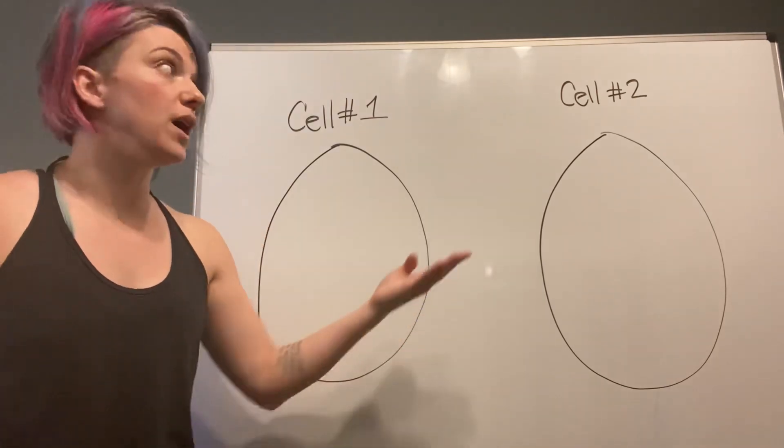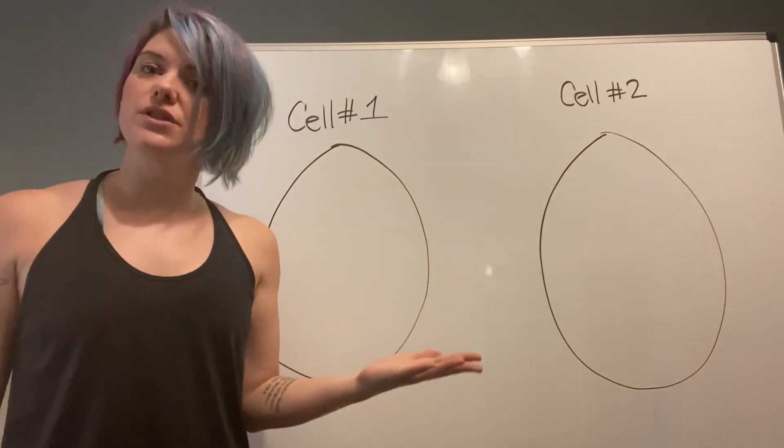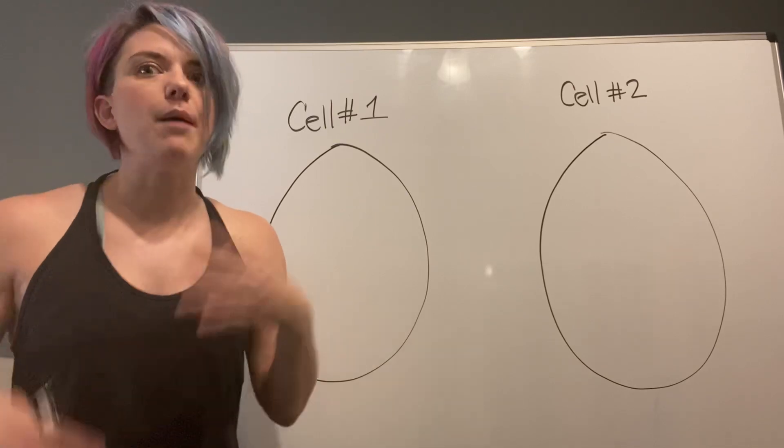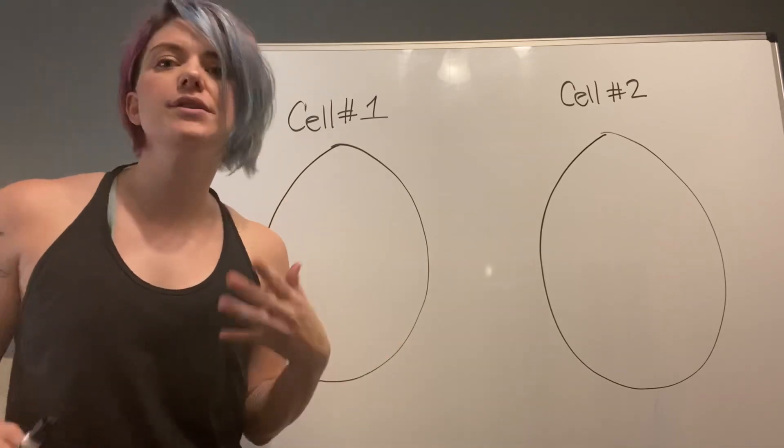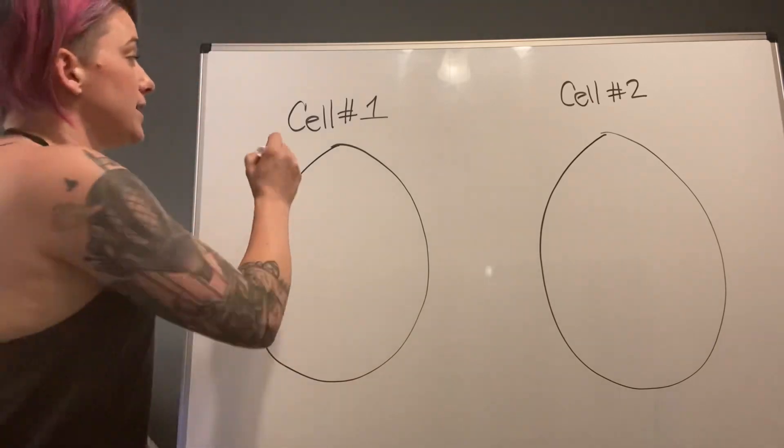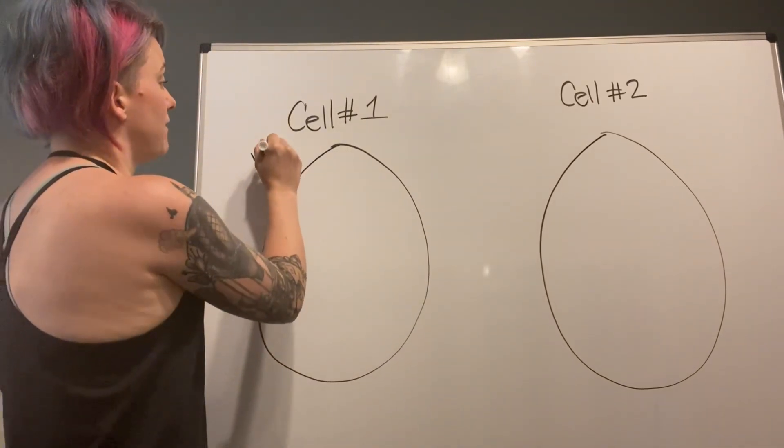So here I have cell number one and cell number two. We could just imagine that these are maybe epithelial cells in your lungs or something like that. So cell number one is going to get infected by a virus.